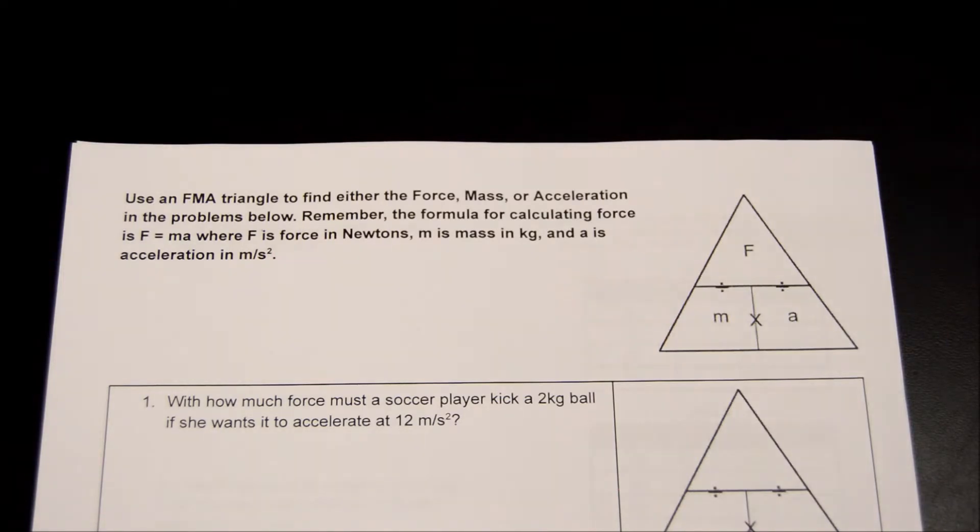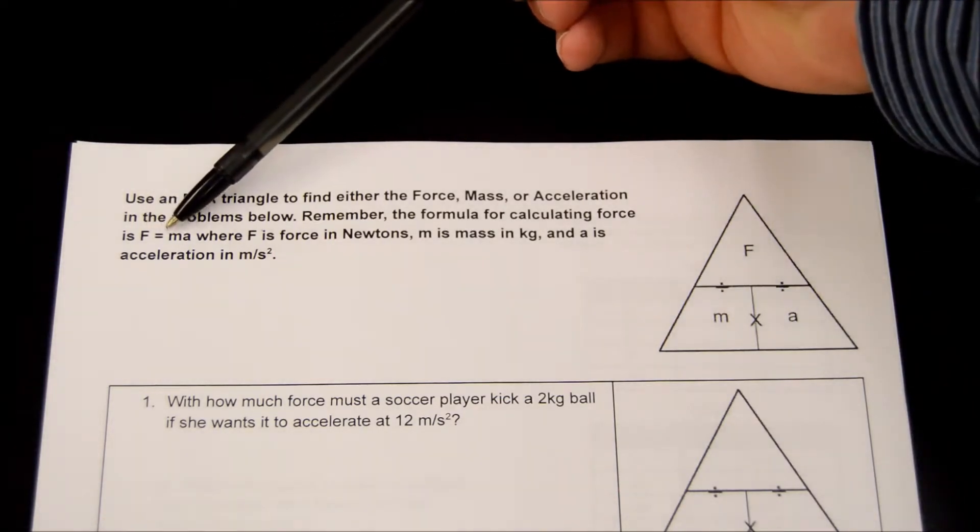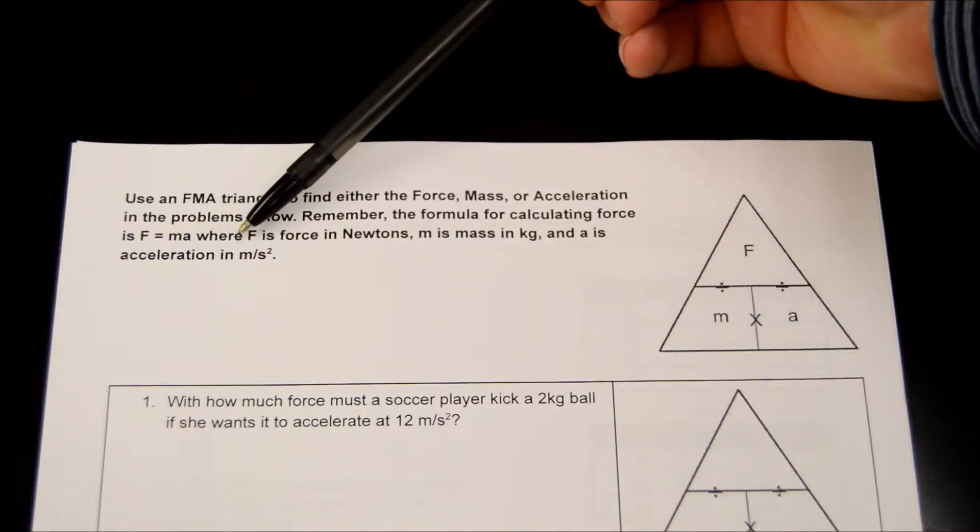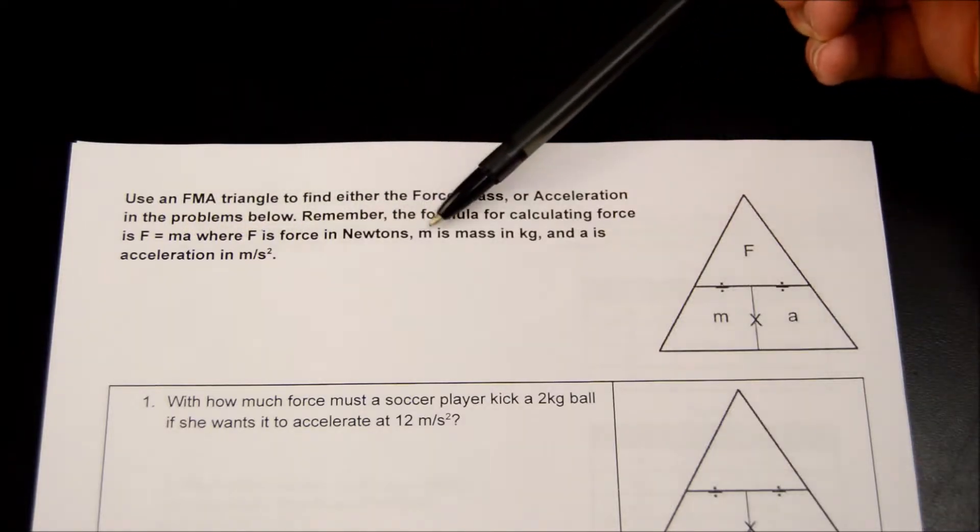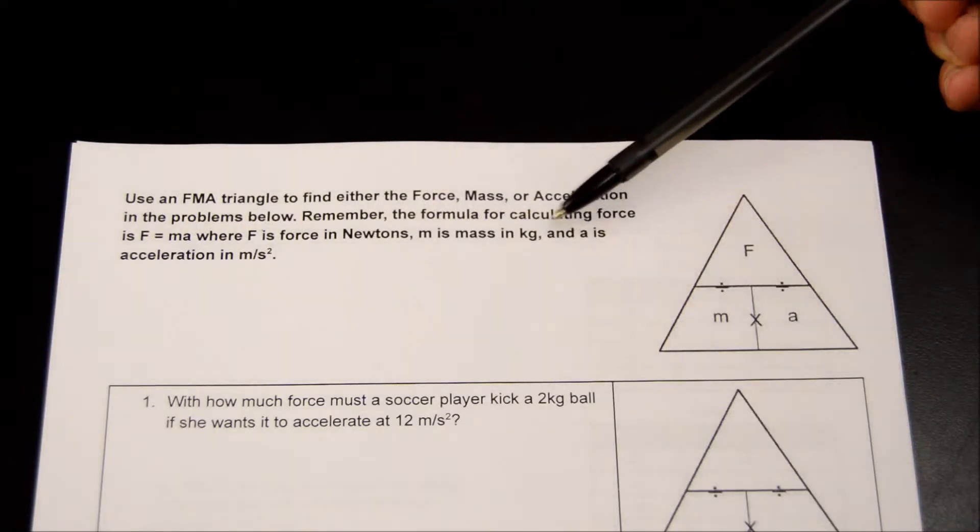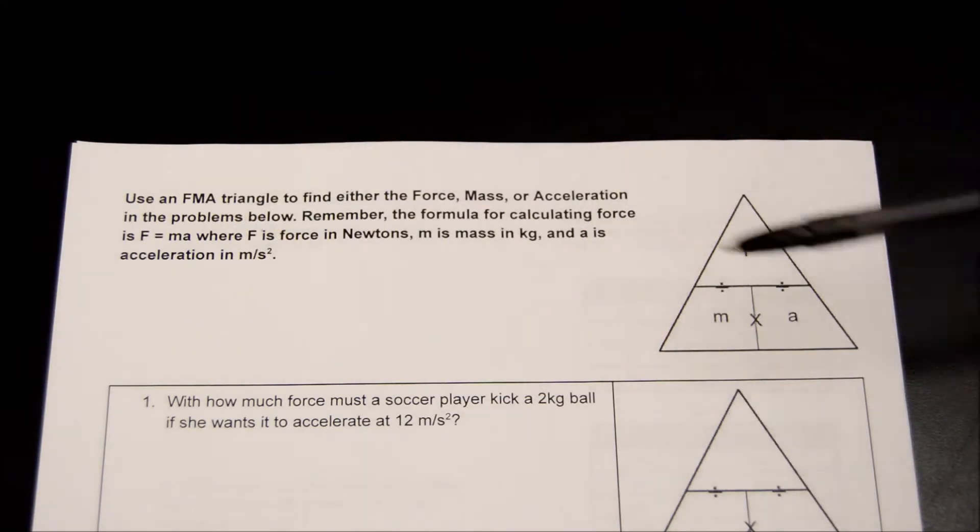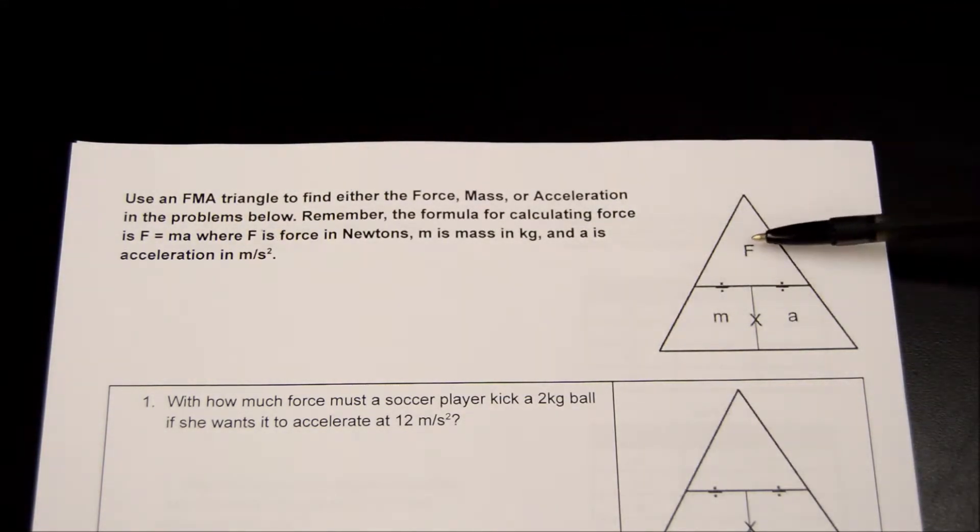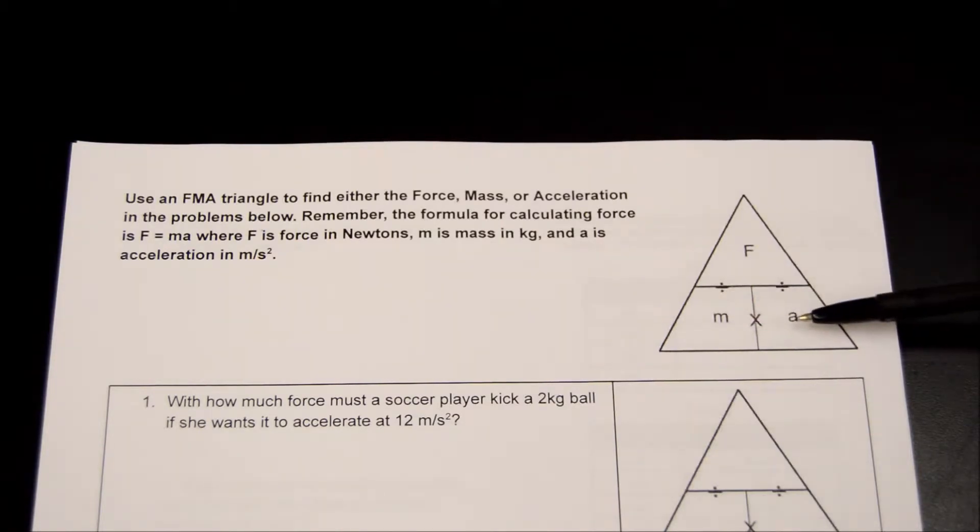The formula for calculating force is force equals mass times acceleration, where F is force in newtons, M is mass in kilograms, and A is acceleration in meters per second squared. This is how you set it up. The force goes on the top because force equals mass times acceleration, and it's always the two in the bottom that are side by side that you multiply.